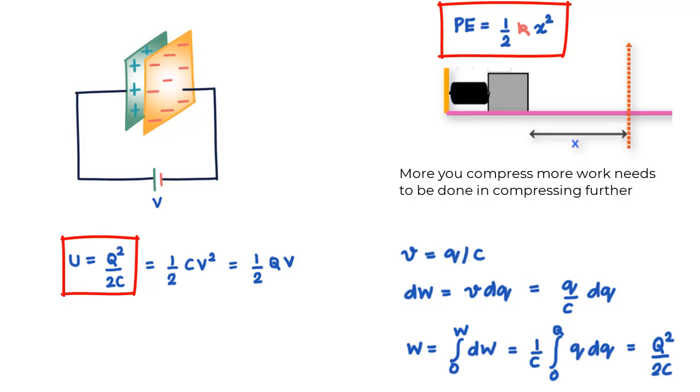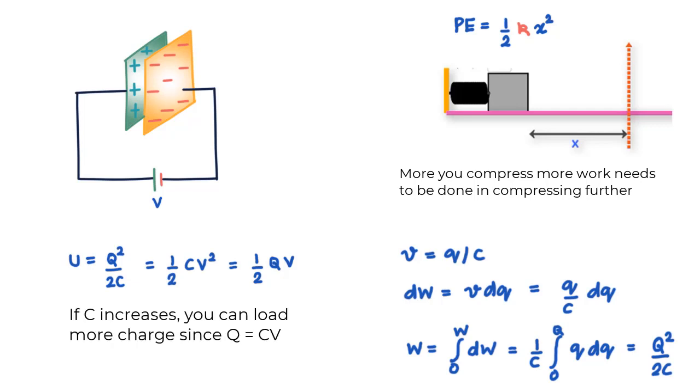Now there are two interesting observations you should think about and crystallize in your mind. One, these equations tell us that capacitance measures the ability of a capacitor to store charge and potential energy. So when a capacitor is connected to a battery that provides potential difference V, you can load up more charge on the capacitor if you increase the C value, and as a result of increase in C, more potential energy can be stored on the capacitor.